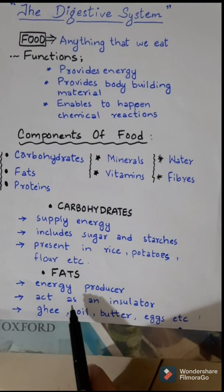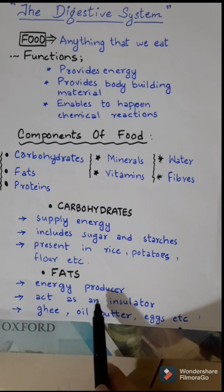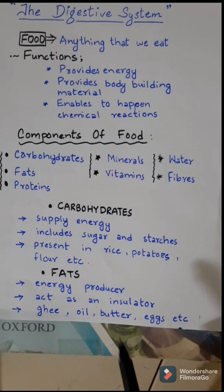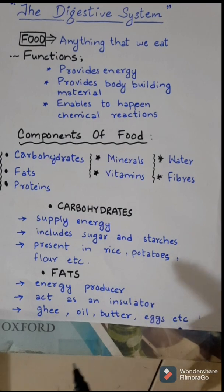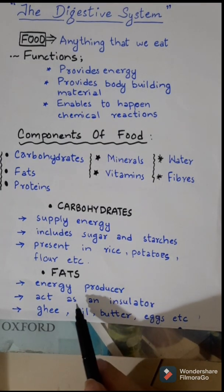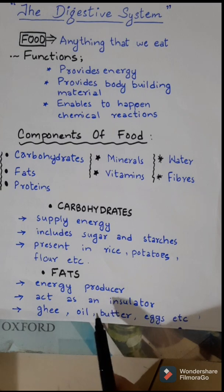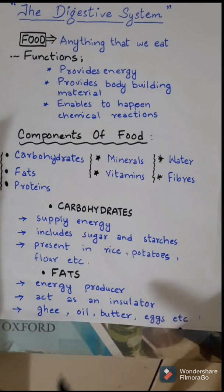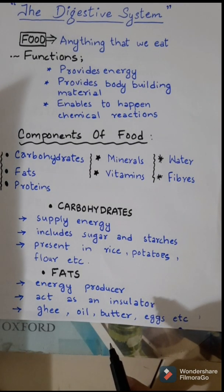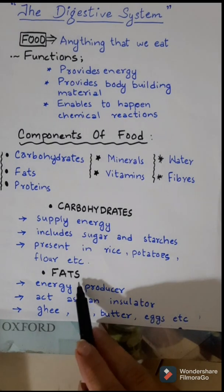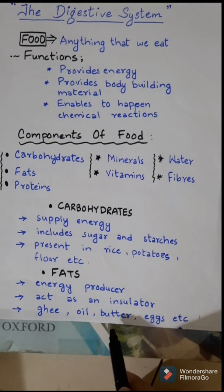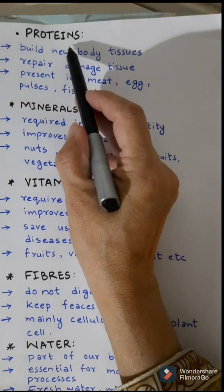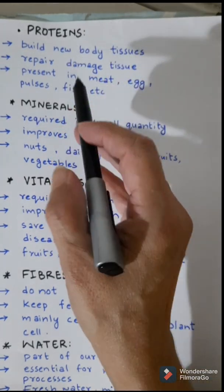Fats are another component of food. They are also energy producers — they provide twice the amount of energy as the same quantity of carbohydrates. A thin layer of fat under your skin acts as an insulator and keeps the body warm. However, too much fatty food is not healthy and does not make the body look good.